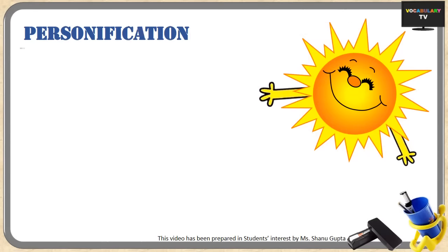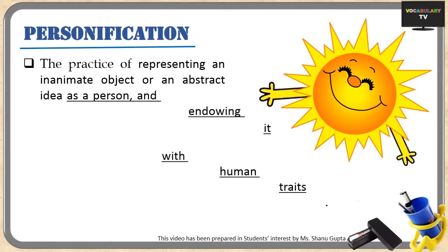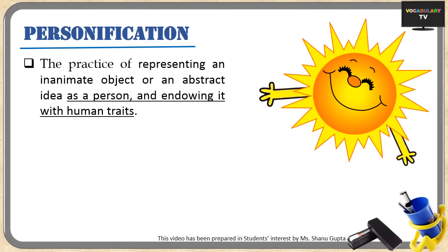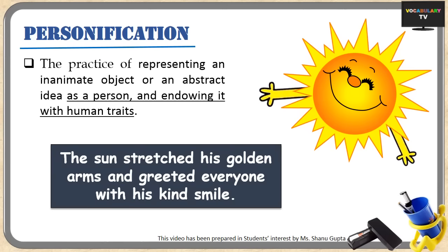Our third figure of speech is personification. This figure can be called a type of metaphor because in personification we represent an inanimate object or an abstract idea as a person and give it human traits. In literature and poetry we often come across instances where inanimate objects such as the sun, moon, stars, earth, and rivers are personified. For example, when we say 'the sun stretched his golden arms and greeted everyone with his kind smile,' we are representing it as a person with human characteristics.